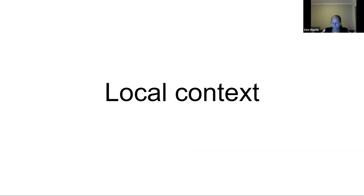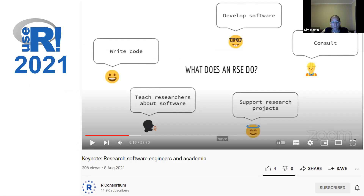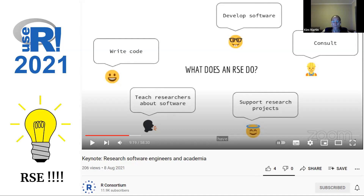Talking now about the local context — South Africa and more specifically Stellenbosch University. My training is in biomedical science, and it was only during the latter stages of my PhD that I discovered I really enjoyed coding much more than wet bench work. I attended an R conference in the middle of last year and listened to a keynote by Heidi Seibold about what a research software engineer was. I'd never heard the term before and it was an epiphany moment for me — it made complete sense the role of an RSE in terms of the bigger academic ecosystem.